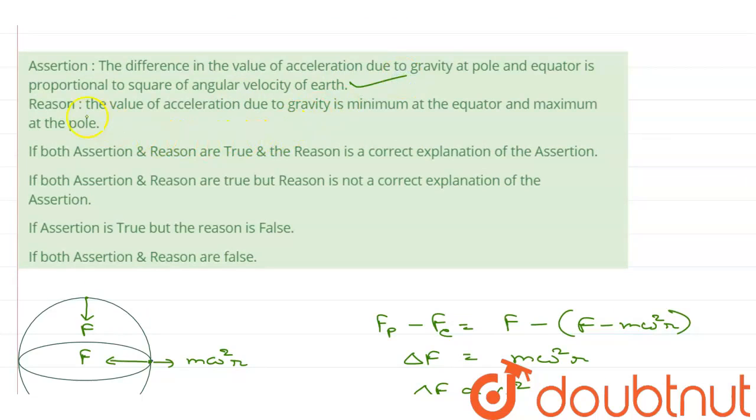So, assertion is true. The reason says the value of acceleration due to gravity is minimum at the equator and maximum at the pole.